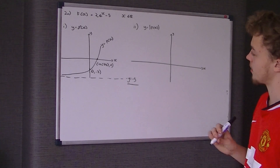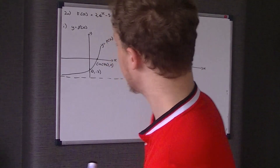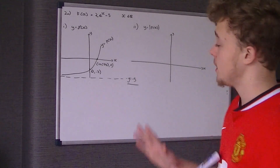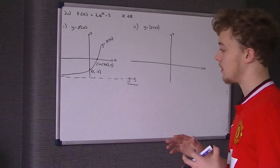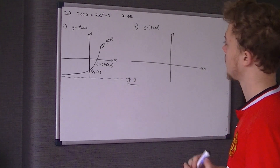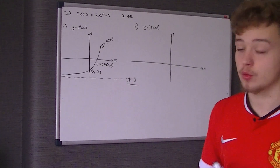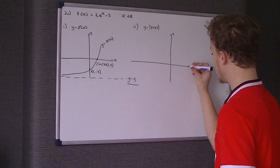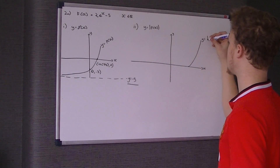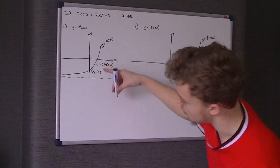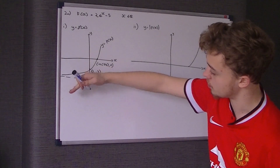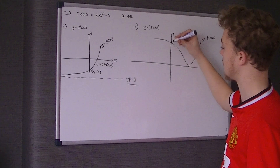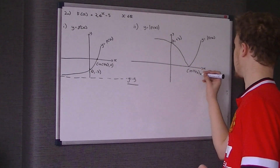The next part asks us to draw y = |f(x)|. The modulus of the whole thing means it just doesn't go below the x-axis — it's a reflection in the x-axis for any part that is negative. All the y-coordinates are going to be positive, without changing in magnitude. From right to left up to ln(5/2), both graphs are exactly the same. Past this point, the original goes negative, so the modulus graph is just reflected upward. The y-intercept becomes (0, 3) and the x-intercept stays at (ln(5/2), 0).